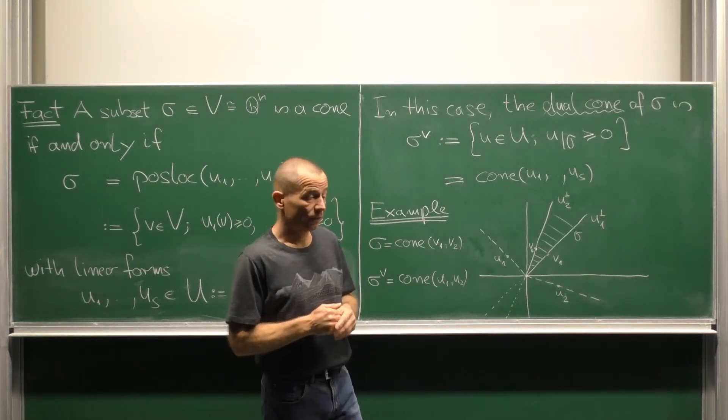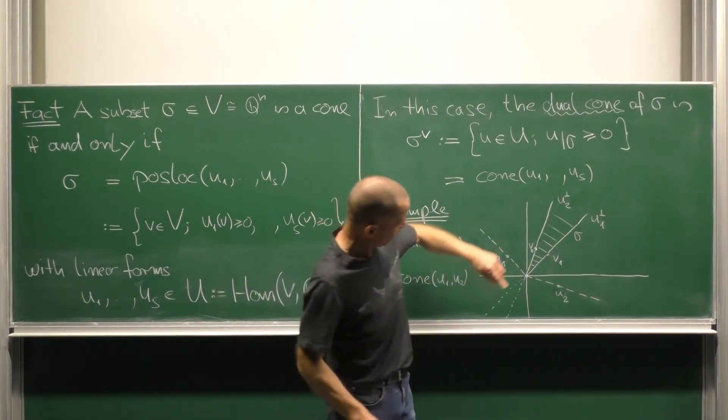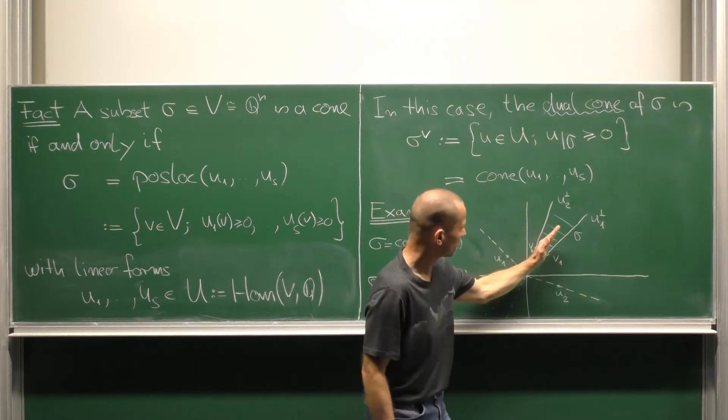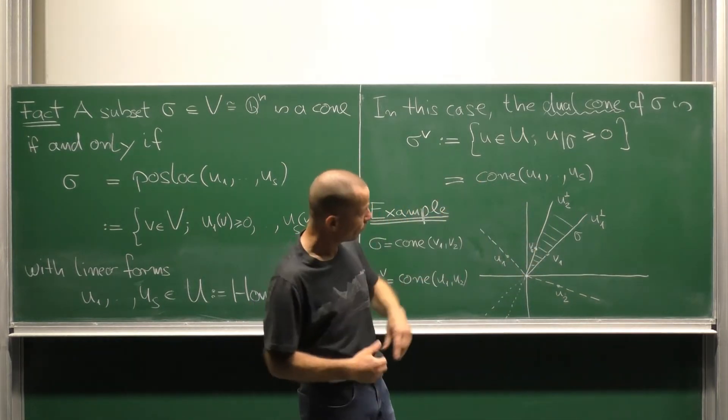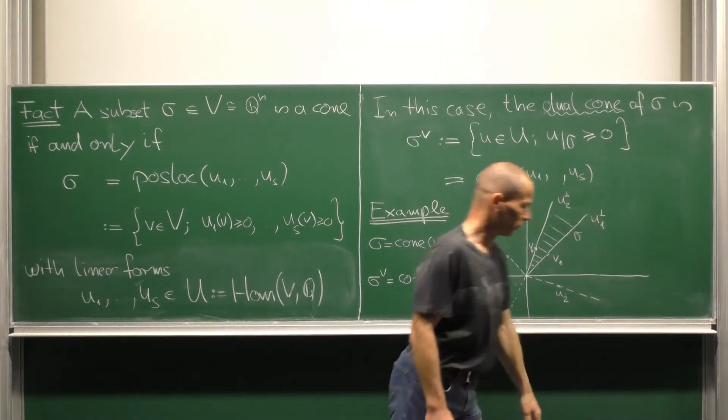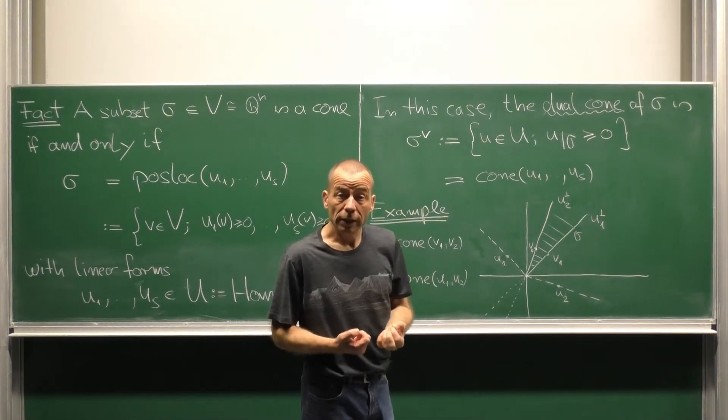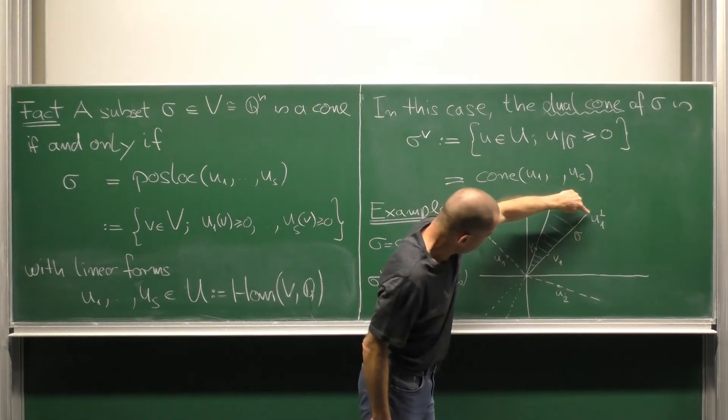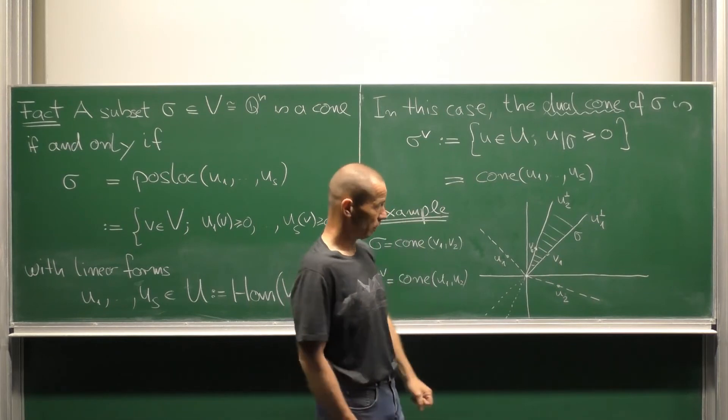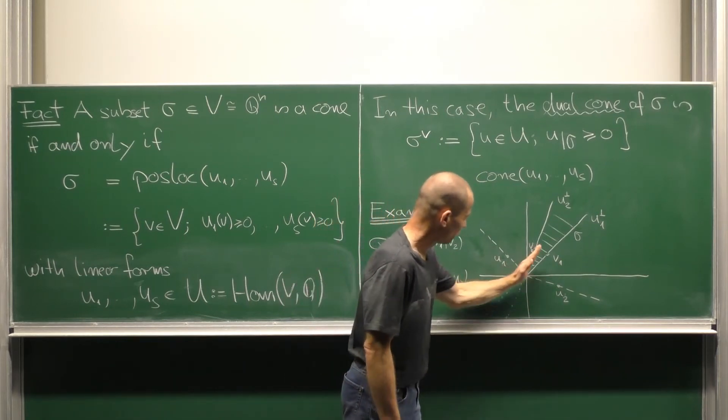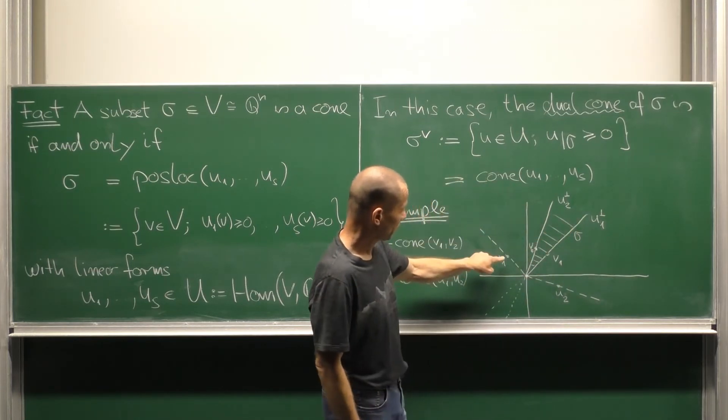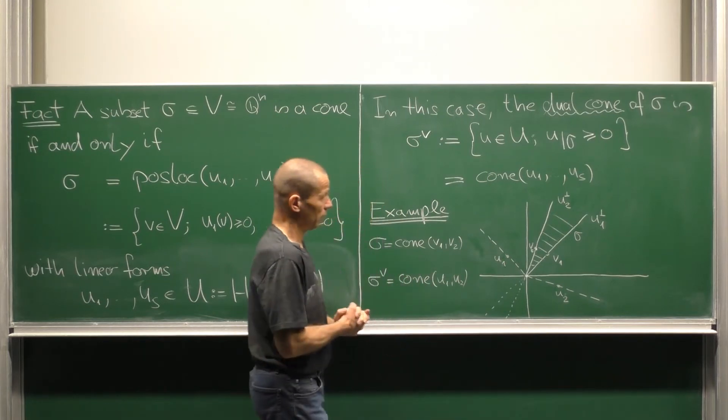The idea is to regard sigma as an intersection of two half spaces. Firstly, the half space having this as a bounding line extending into this direction. Secondly, the half space having that one as a bounding line extending into that direction. Now we look for a linear form which vanishes along this bounding line and evaluates non-negatively in that direction. That means it has to live somewhere on the ray perpendicular to this line and lie in this area here, so it can maybe be this u1.